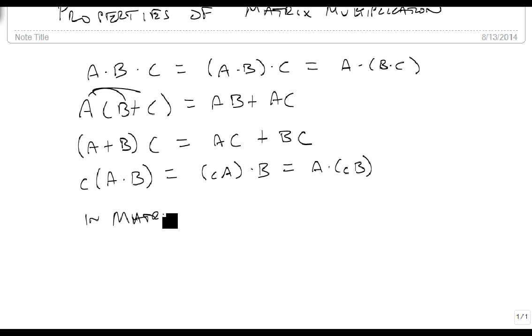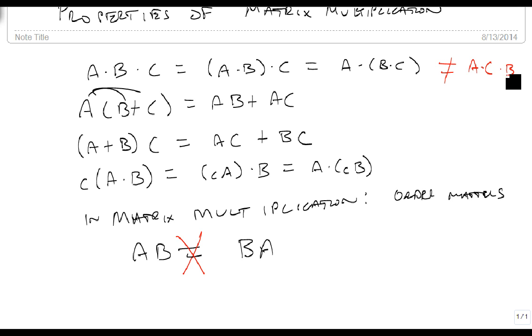In matrix multiplication, order matters. A·B does not equal B·A. You cannot change the orders. So here, this would not be equal to A times C times B.